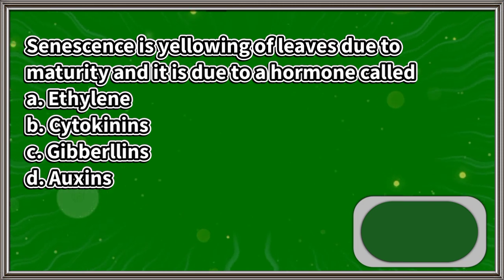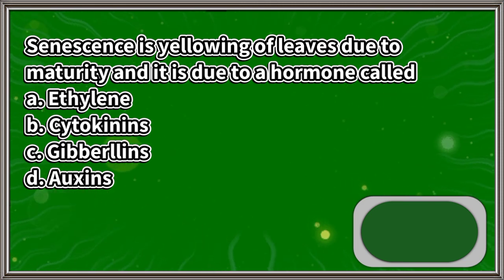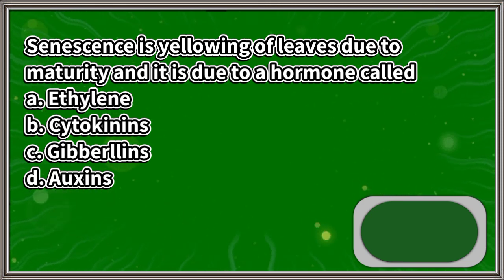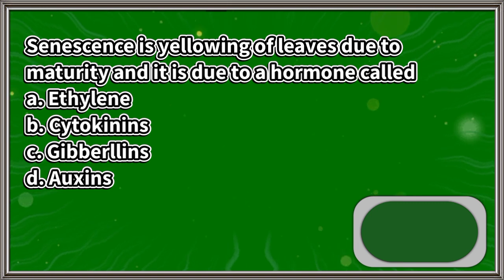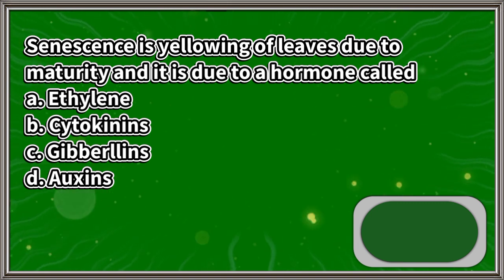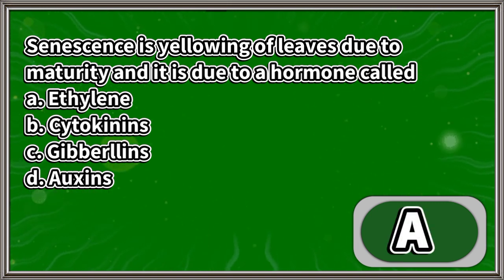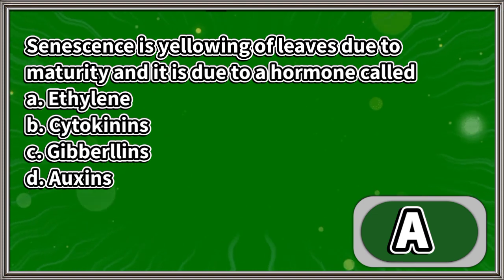Senescence is the yellowing of leaves due to maturity, and it is due to a hormone called: A. Ethylene, B. Cytokinins, C. Gibberellins, D. Auxins. The answer is letter A.